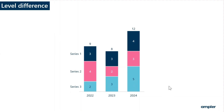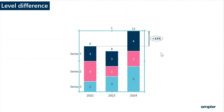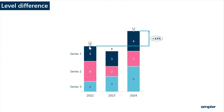Level difference helps to visualize the difference between two segments in a chart. To insert a level difference, right click on the chart and select level difference from the context menu. To change which segments are compared, simply drag the blue handle to the desired location.